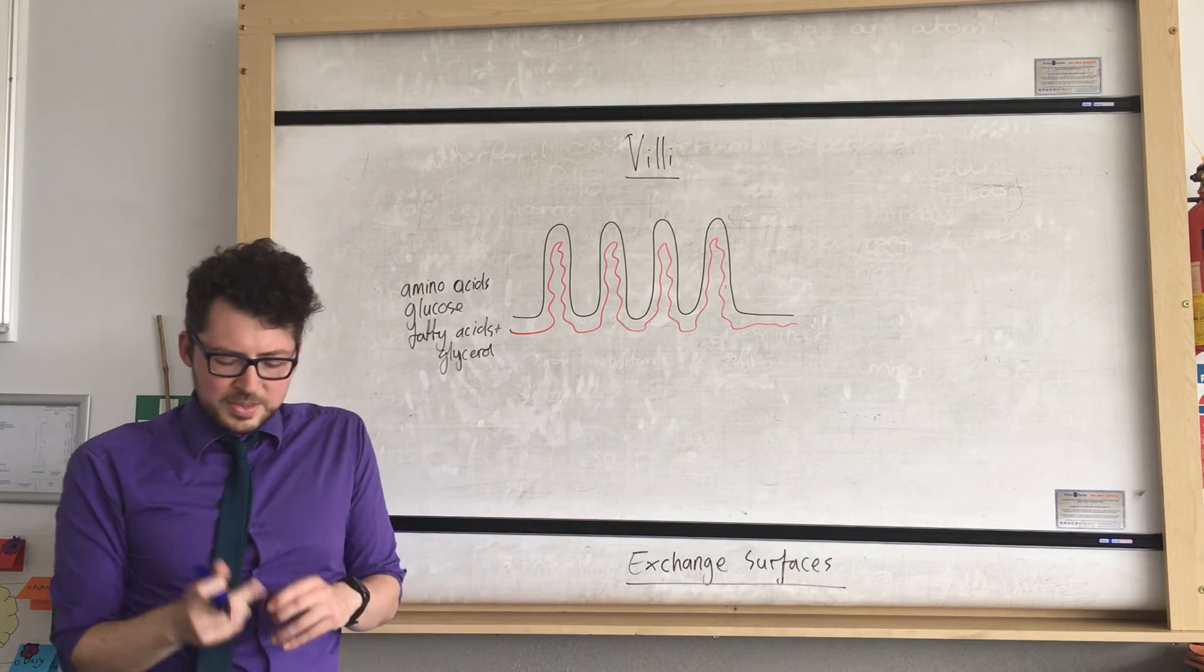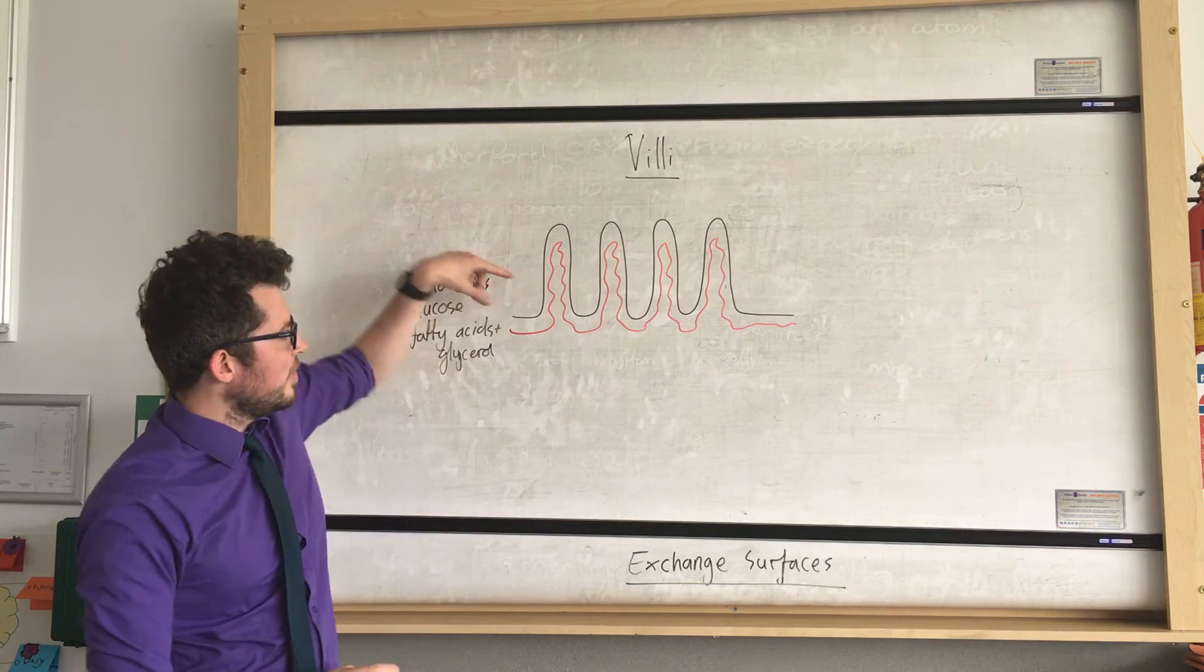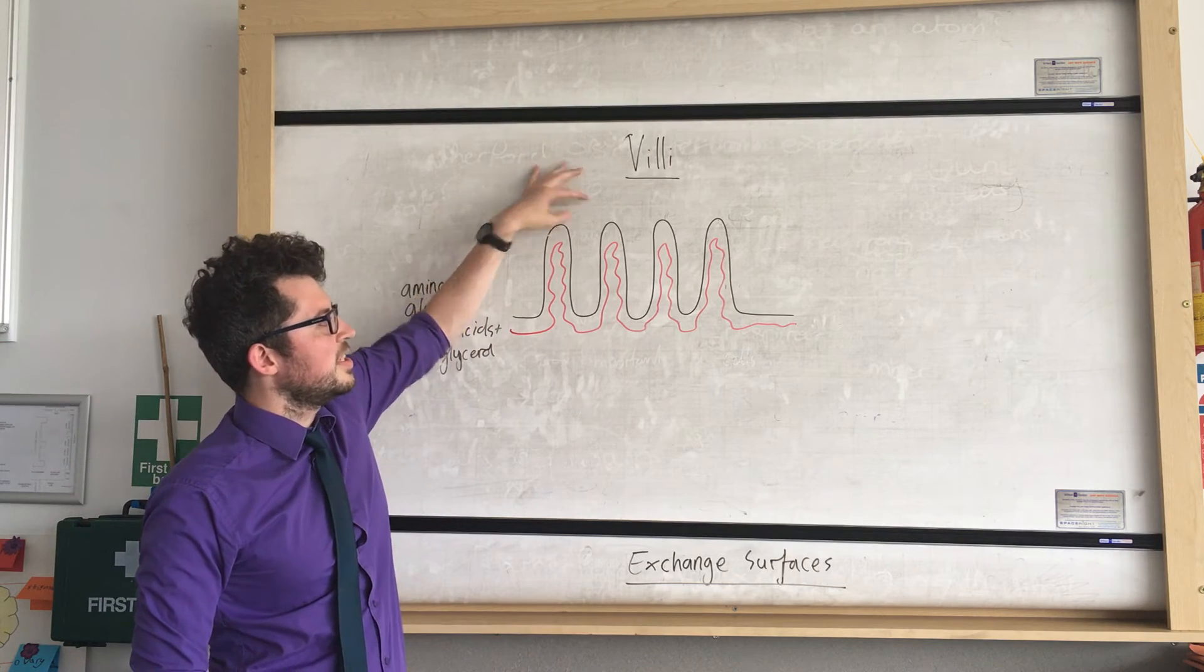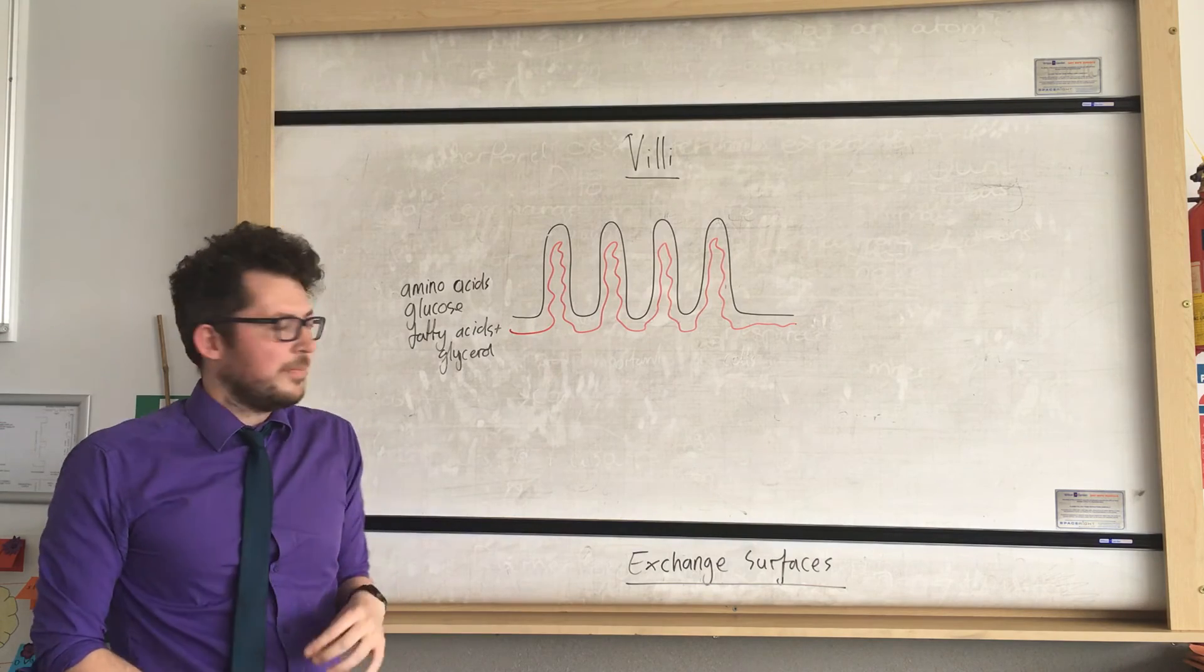So in the small intestine we have these folds known as villi. Imagine this part here would be the lumen, or the space inside the small intestine, and these folds are in the wall of the small intestine. They're called villi.